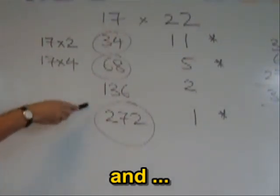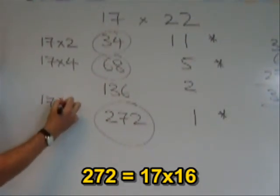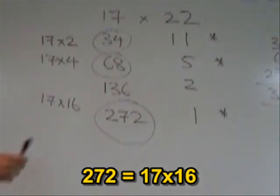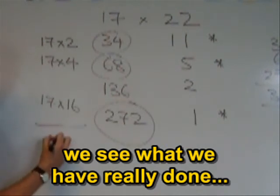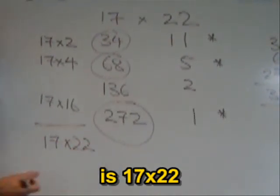136 is 17 times 8. 272, well it's times 2 times 2 again, which makes 17 times 16. And if we add all these numbers together, 2 plus 4 plus 16, we'll see that what we've really done is 17 times 22.